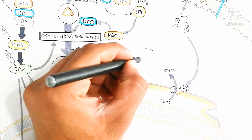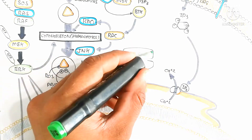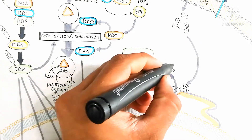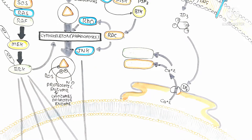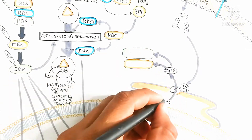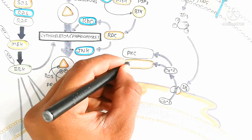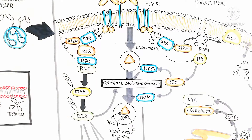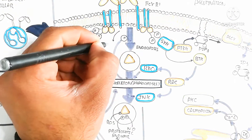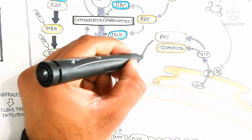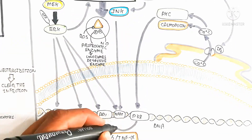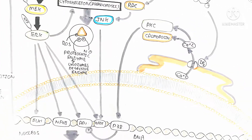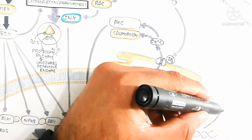Protein kinase C is activated through calcium stimulation and phosphorylation to stimulate P38. P38 in turn stimulates IP1 and also produces interleukin-2, interleukin-6, and tumor necrosis factor alpha.